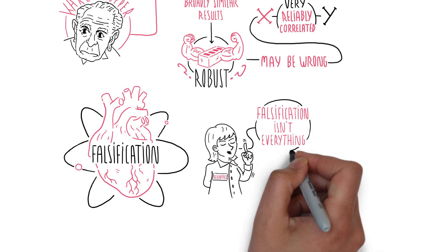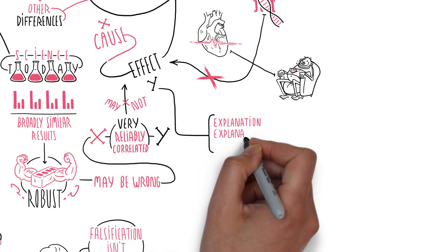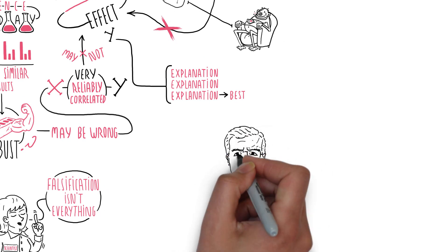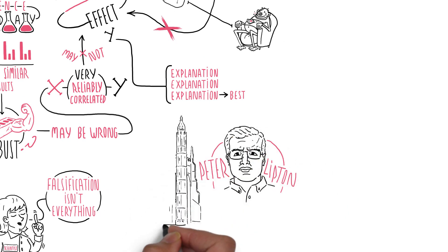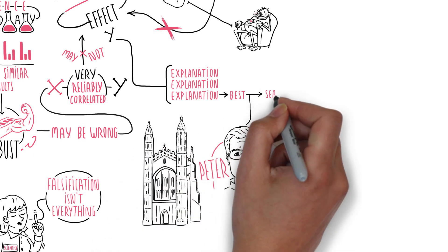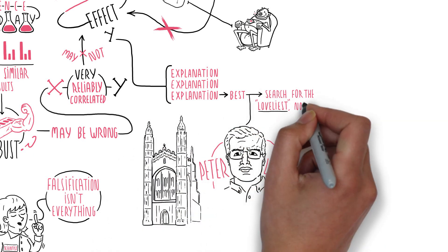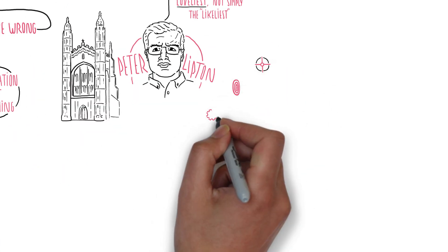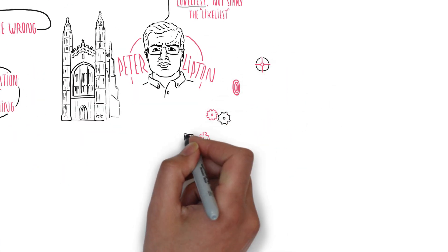Falsification isn't everything. Another approach to exploring cause and effect relationships is inference to the best explanation. Peter Lipton, the late philosopher of science at the University of Cambridge, described this as the search for the loveliest, not simply the likeliest, explanation. This should be one characterized by scope, precision, mechanism, unification and simplicity.